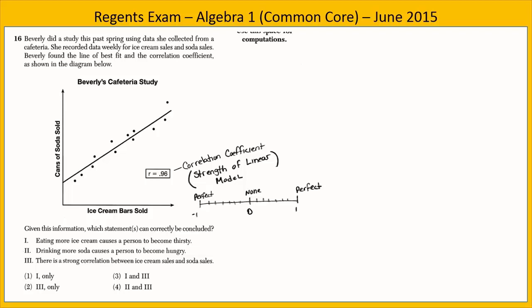Choice 2 says drinking more soda causes a person to become hungry. Again, there is a correlation, but the word 'causes' is the problem — we can't determine a cause-and-effect relationship from correlation alone. Choice 3 says there is a strong correlation between ice cream sales and soda sales. This is true — the correlation coefficient is 0.96, very close to positive 1. Strong correlation does not imply cause and effect. Only choice 3 is a correct conclusion, so choice 2 — option 3 — is our answer.